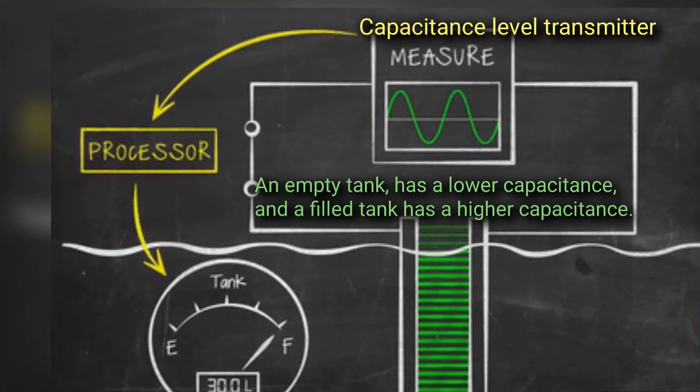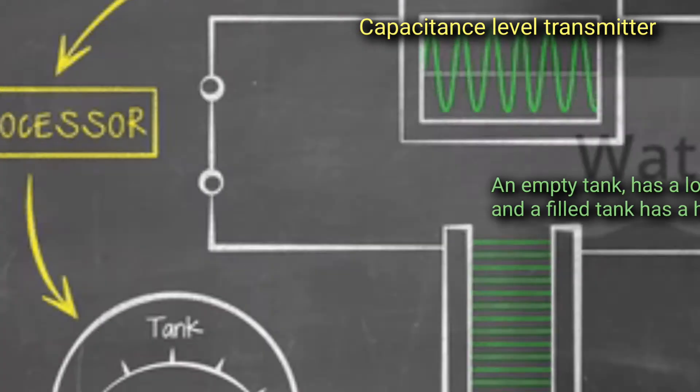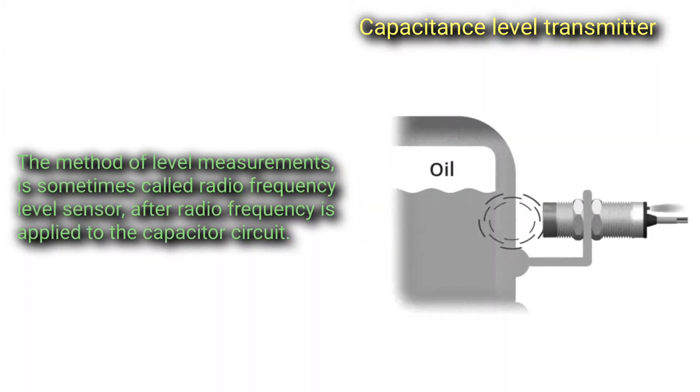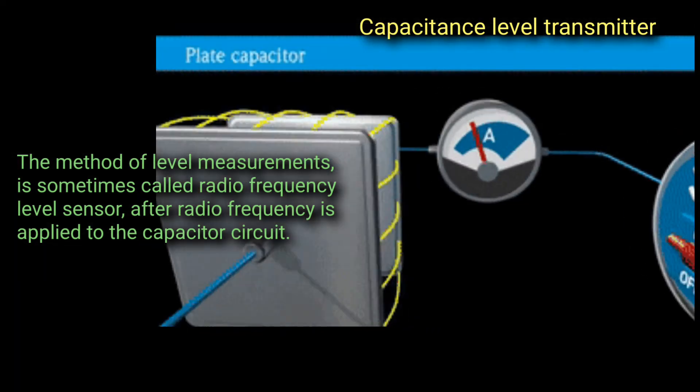An empty tank has a lower capacitance and a filled tank has a higher capacitance. The method of level measurement is sometimes called radio frequency level sensor after radio frequency is applied to the capacitor circuit.